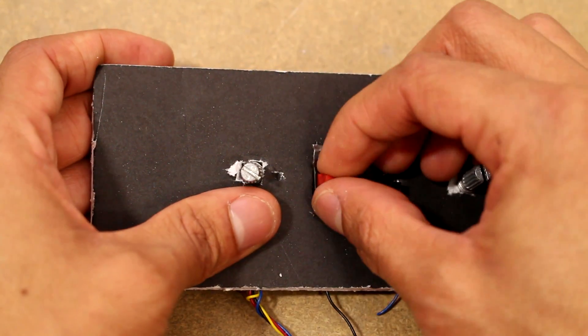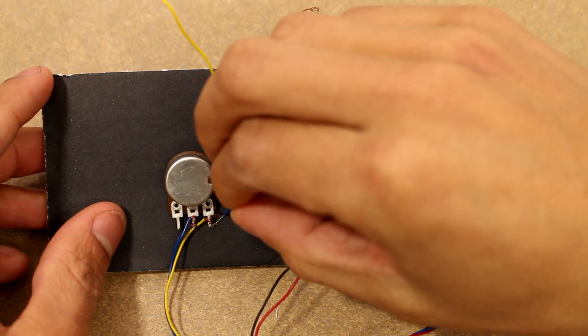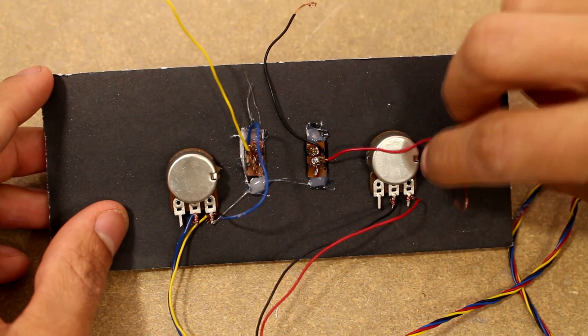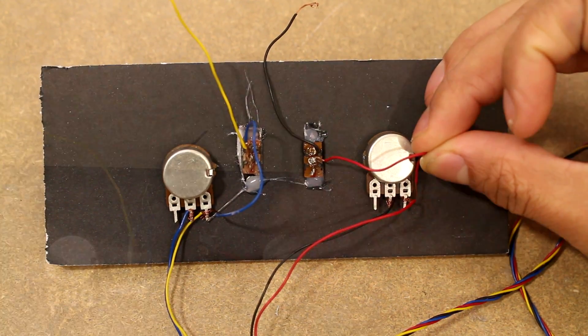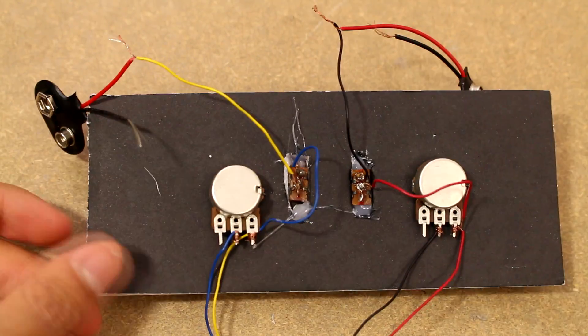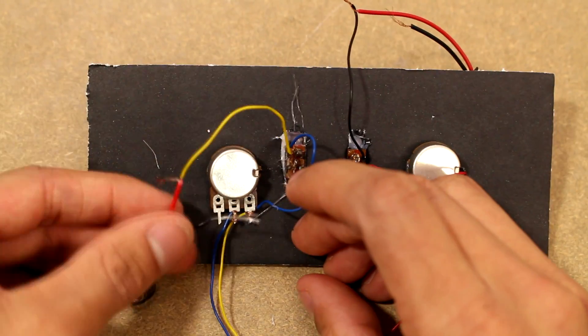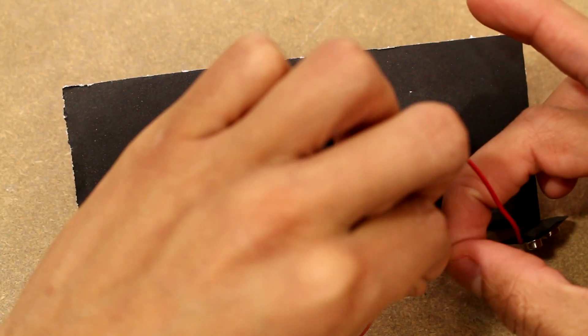So basically what we want to do is hook up the potentiometer in parallel with the power source and in parallel as well with the set of motors that it's going to control. And then we're just going to have a switch in series with those so the switch can turn it on and off.